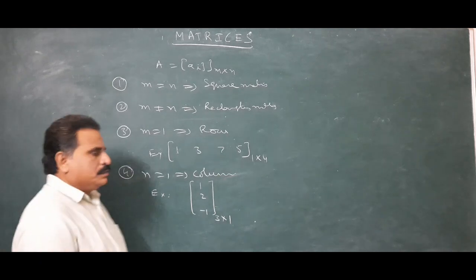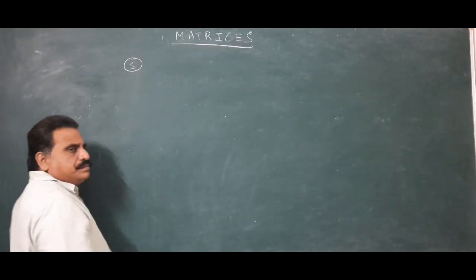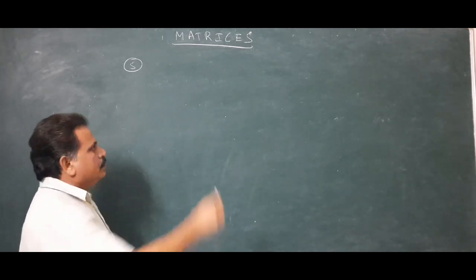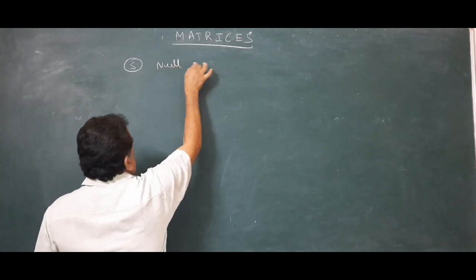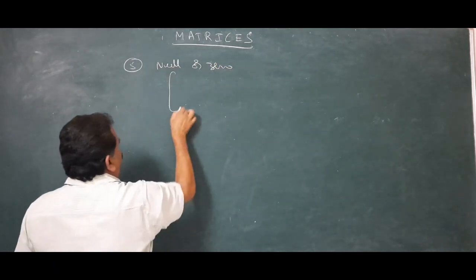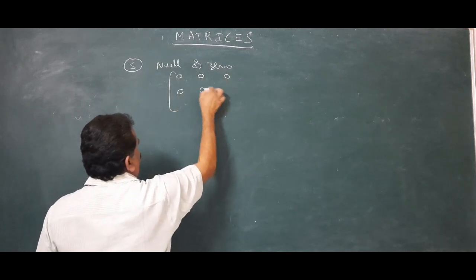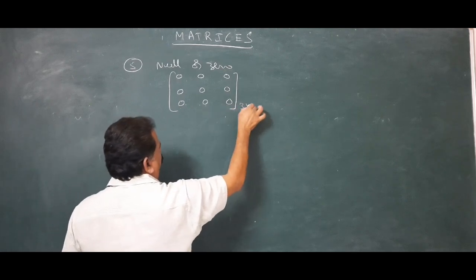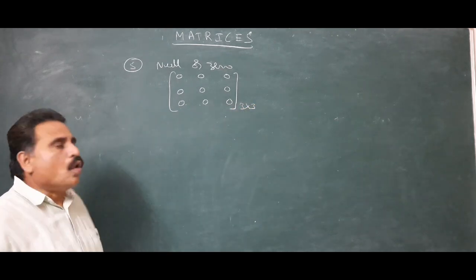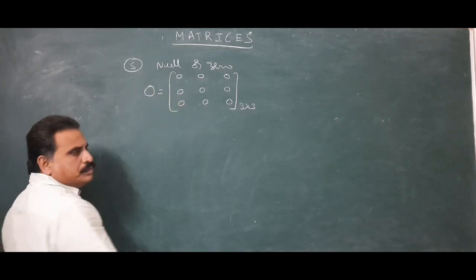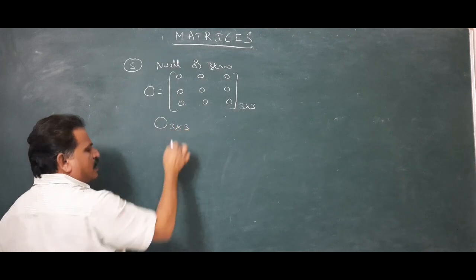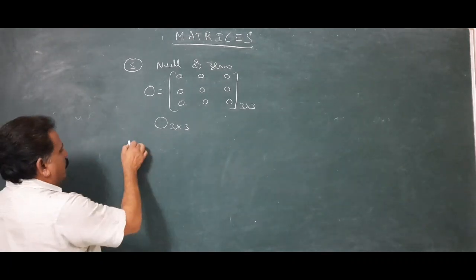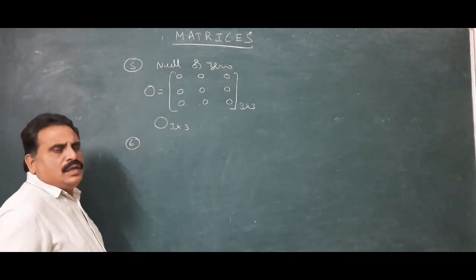If all the elements in a matrix are zeros, that is called a null matrix or zero matrix. For example, a 3 by 3 matrix with all elements equal to zero is a null matrix. It is denoted by O, or specifically O(3×3) to also indicate the size.